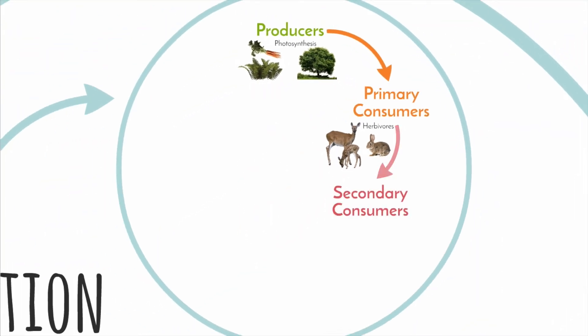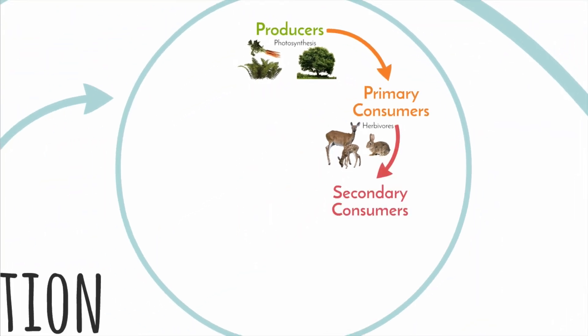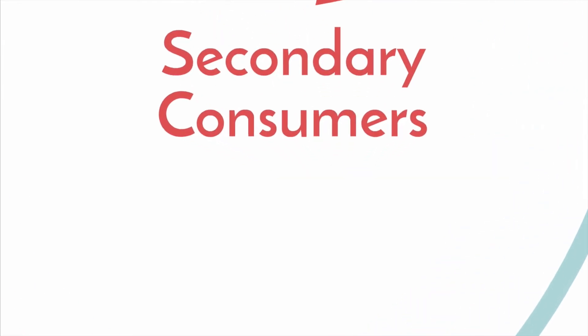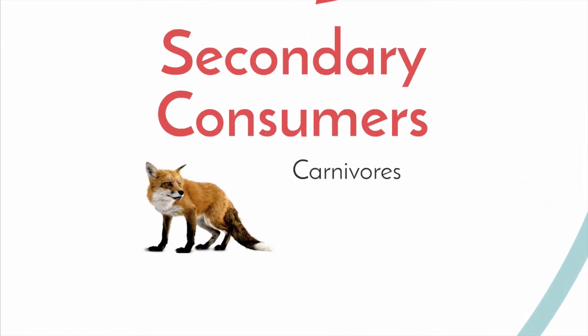Secondary consumers are also heterotrophic living things because they feed on primary consumers, so they are carnivores.